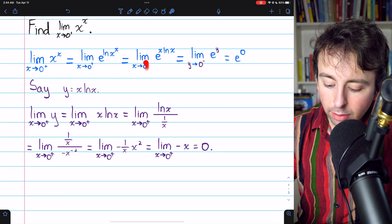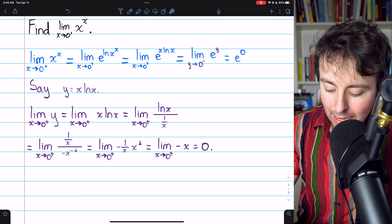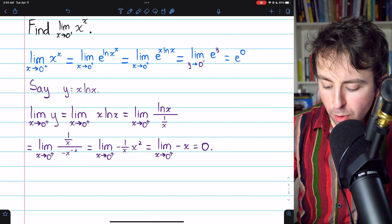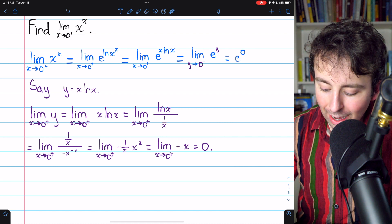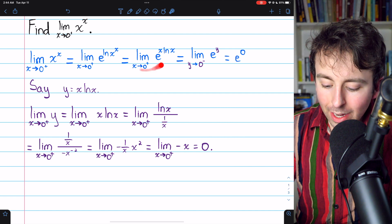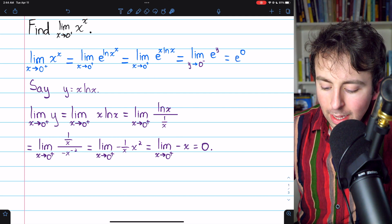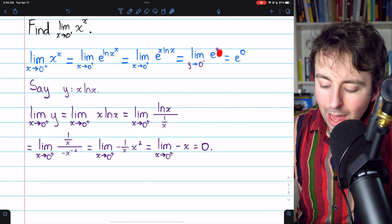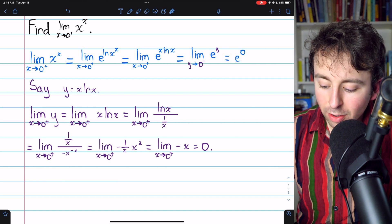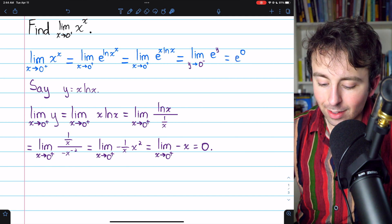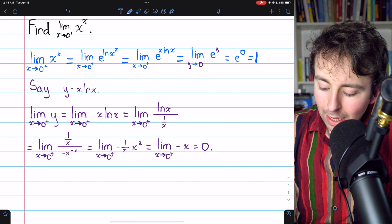So, as x is approaching 0 from the right, the exponent of e, x ln x, is approaching 0. In particular, it's approaching 0 from the left, since we've got this negative x. So, we can rewrite this limit. The limit of e to the x ln x as x approaches 0 from the right is the same as the limit of e to the y as y approaches 0 from the left. And that's just equal to e to the 0. We can just plug the 0 in, since e to the y is continuous. And, of course, e to the 0 is 1.